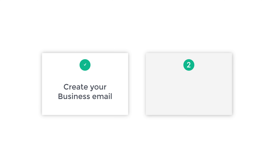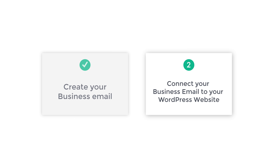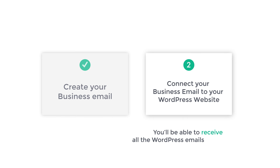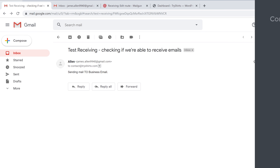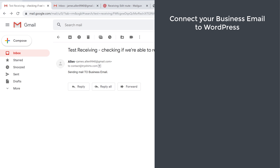Once you have created your business email, we can go to the next part of this tutorial, which is to connect your business email to your WordPress website. Once you connect your business email to WordPress, you'll be able to receive all the WordPress emails in your inbox. To do this we are going to do three steps. The first step is to add your business email in WordPress.